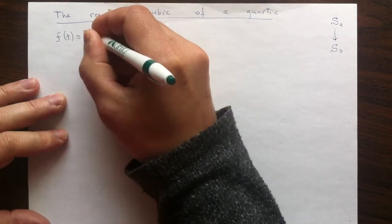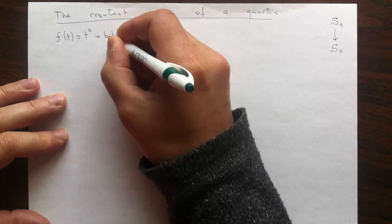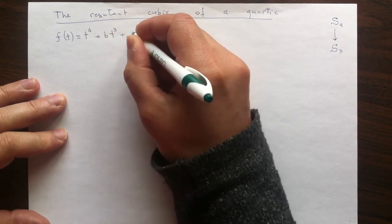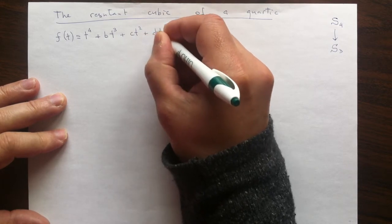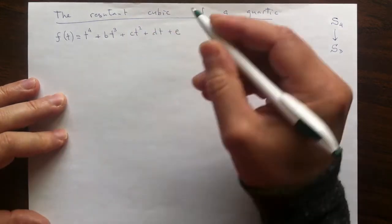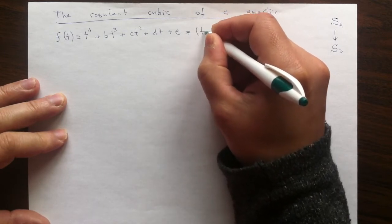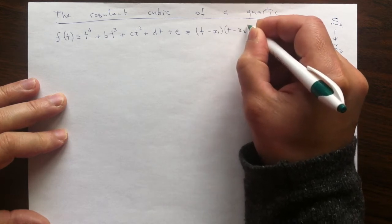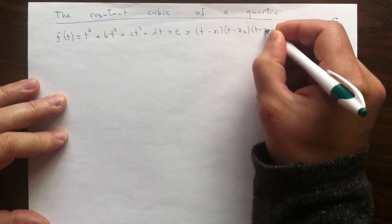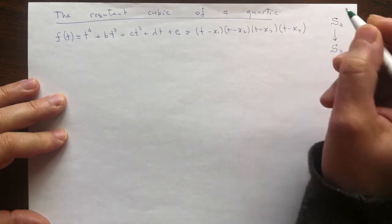I will make this degree 4 polynomial monic, starting with coefficient 1 for the highest degree, and then I have some coefficients. Just imagine that I have my roots called x1, x2, x3, and x4.